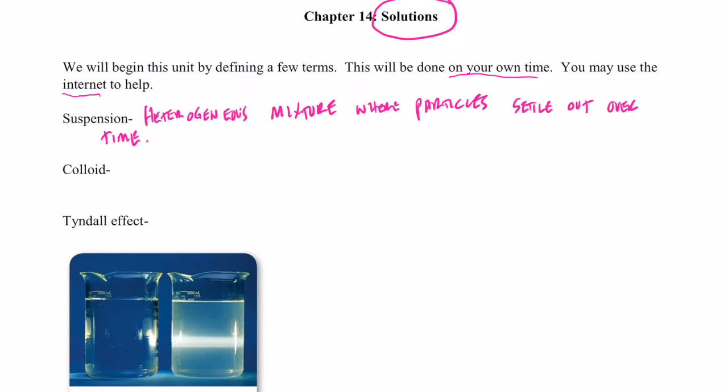Another suspension might be oil in water. We might have the oil separating due to differences in density from the water. Many suspensions can be separated by filtration. We'll talk a bit more about filtration in just a few minutes. So a suspension is a heterogeneous mixture where the particles settle out over time and they can be separated by filtration.